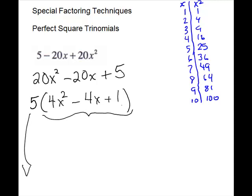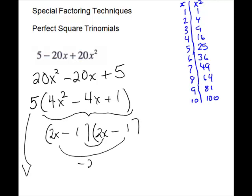This one looks like a good candidate for perfect square trinomial. We have a square at the front and a square at the end. So let's guess that — we'll do like signs, both minus. For 4, our square root is 2, and we also need the square root of x², which is x. And 1 and 1. We'll double check: minus 2x and minus 2x is minus 4x, and that works. So don't forget to put this 5 with your answer.